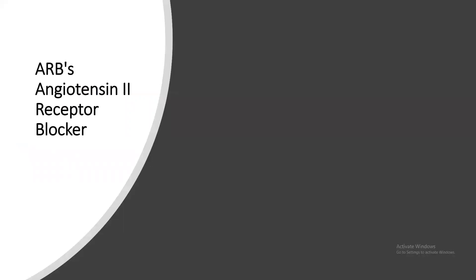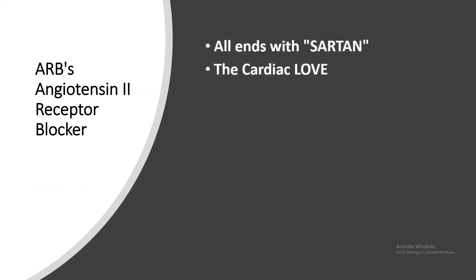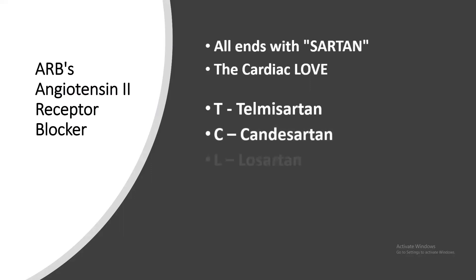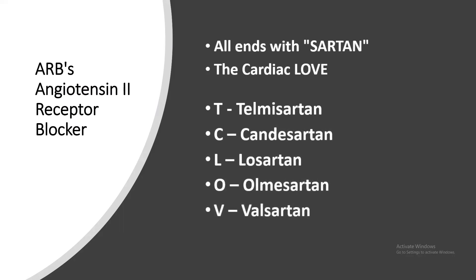If a patient cannot take ACE inhibitors, the second class is ARBs — angiotensin 2 receptor blockers. All ARBs end with '-sartan.' They are remembered as 'the cardiac love': T for telmisartan, C for candesartan, L for losartan, O for olmesartan, V for valsartan, and also eprosartan.